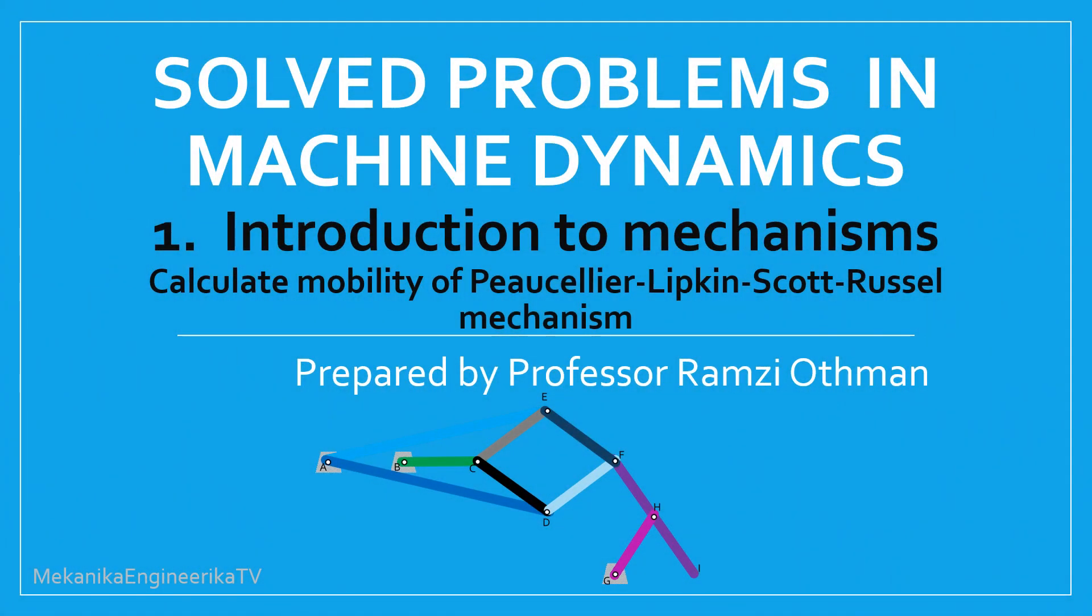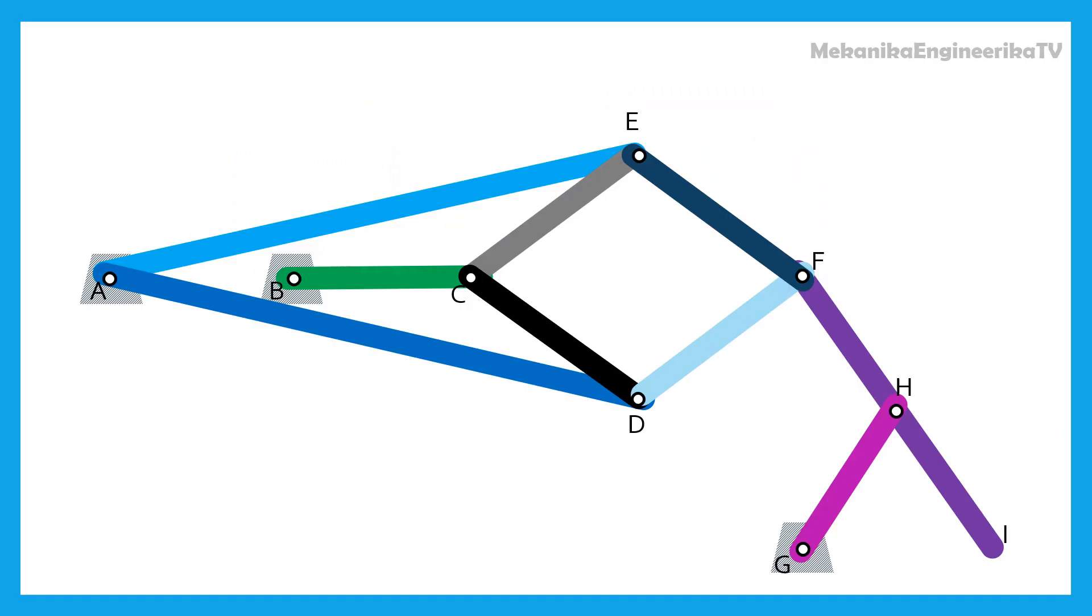This video is part of a series presenting solutions of problems related to machine dynamics. This video presents the solution of a problem dealing with the determination of mobility of a Peaucellier-Lipkin-Scott-Russell mechanism. In this problem, we are asked to determine the mobility of the mechanism shown here.